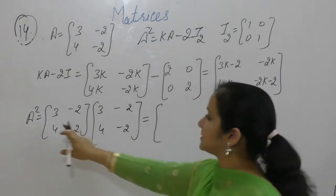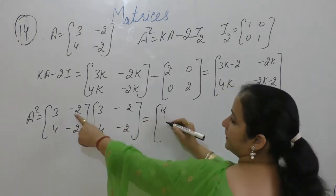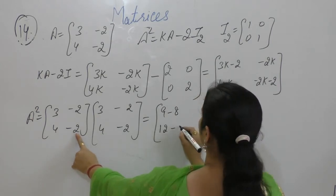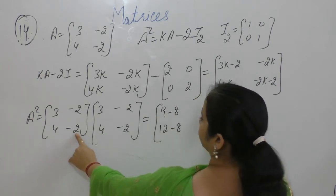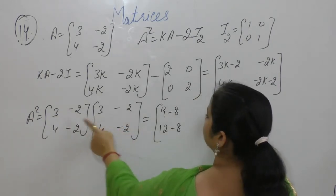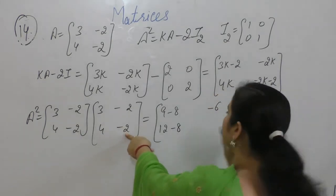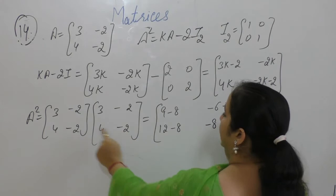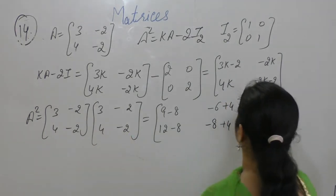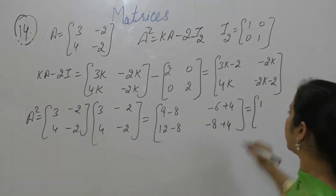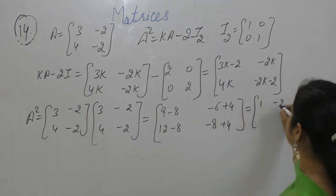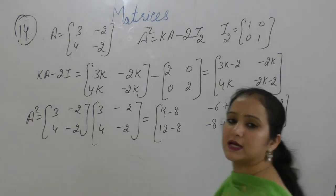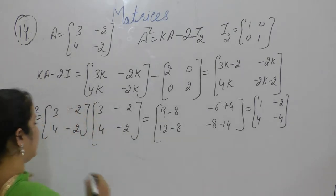Multiplying these matrices: 3 into 3 is 9, minus 2 into 4 is 8; 4 into 3 is 12, minus 2 into 4 is 8; 3 into minus 2 is minus 6, minus 2 into minus 2 is plus 4; 4 into minus 2 is minus 8, minus 2 into minus 2 is plus 4. So we get [[9-8, -6+4], [12-8, -8+4]] = [[1, -2], [4, -4]]. Now these are equal.